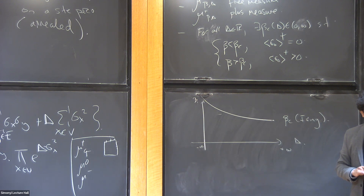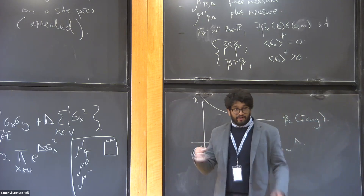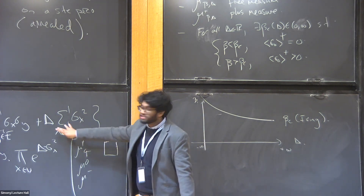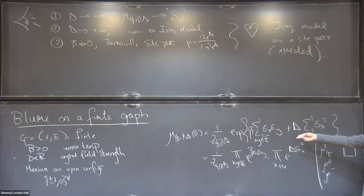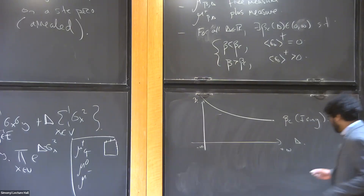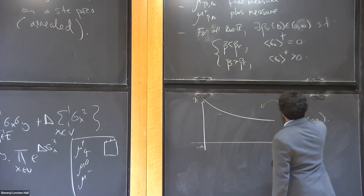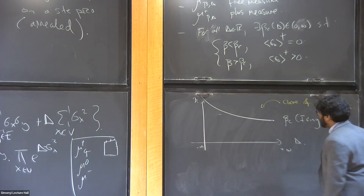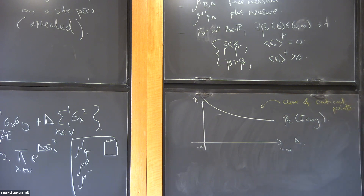Is there a Griffiths inequality for this model? For any ferromagnetic spin system you're going to have FKG and GKS, because the single-site measure can be absorbed. FKG is fine, but Griffiths is maybe a bit different depending on what you mean. It does have monotone correlations.